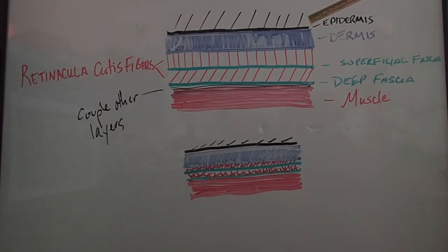Starting at the top we have epidermis, this is your skin. Above those are little hairs sticking out. Below your epidermis is your dermis. Below the dermis you have your superficial fascia, something we talk about a lot.